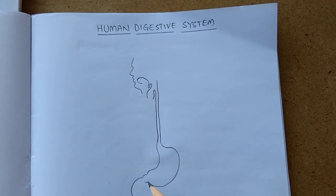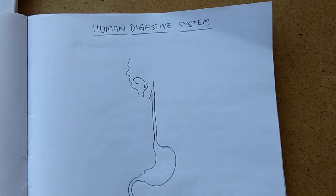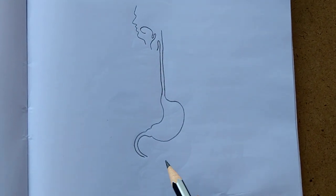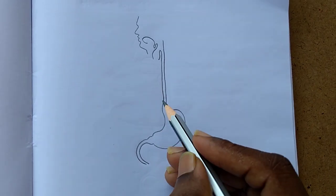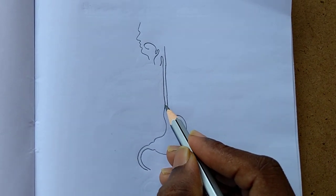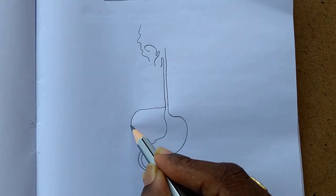...draw a U-shaped duodenum, and after this we have to draw the liver like a cap.